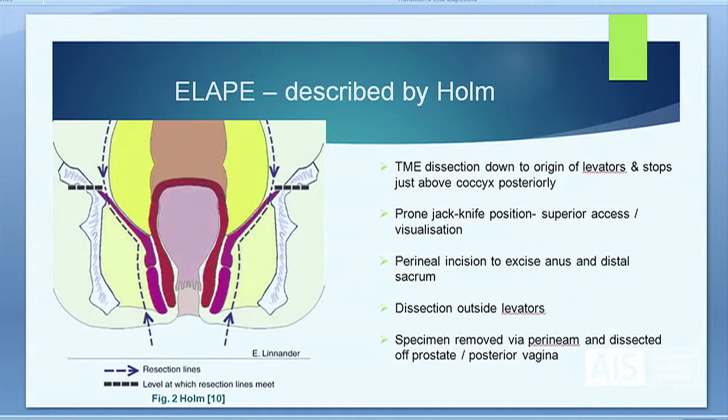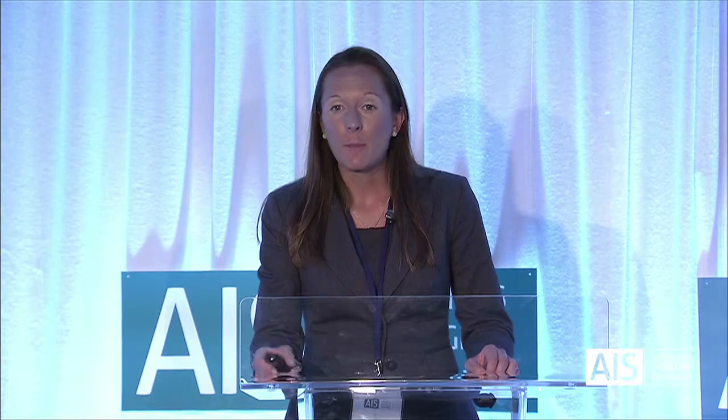A wide dissection is performed, including the sphincter complex, keeping inferior to the levators, reaching a point laterally on the side wall just inferior to the abdominal portion.